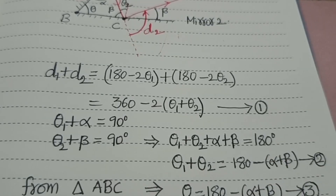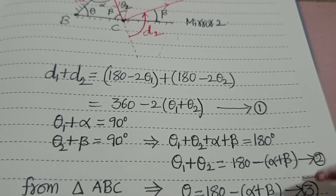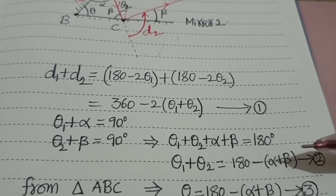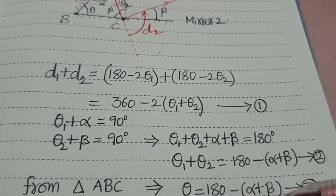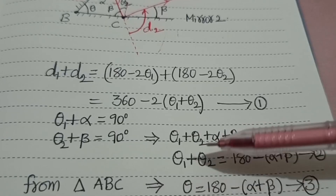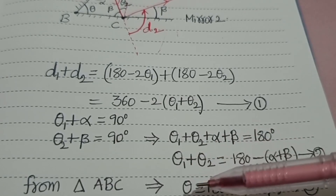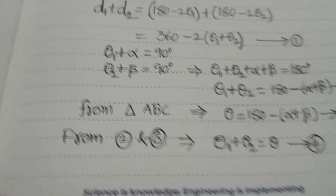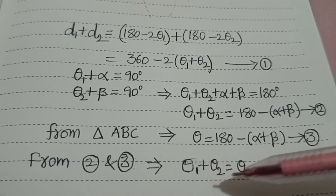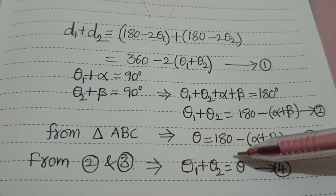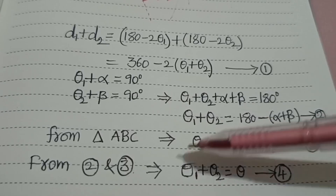From the second and third equations, both have the same RHS: 180° - (α + β). Since the RHS values are equal, we can equate the LHS. From equation 2, LHS is θ1 + θ2; from equation 3, LHS is θ. Therefore θ1 + θ2 = θ. This gives us the relation between the angle between the mirrors and the angles of incidence of both rays.